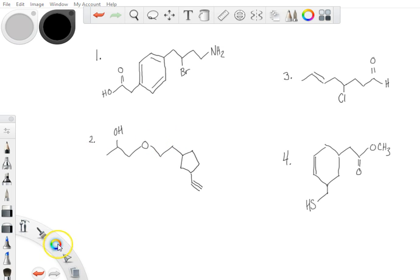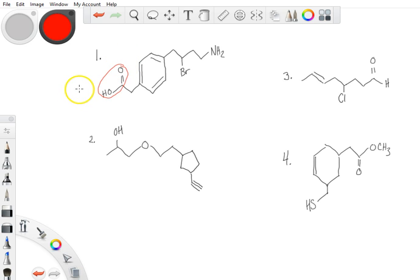All right everybody welcome back. I'm going to change to red ink here as we are going through so it's easier to identify. So in problem one there were a couple of functional groups. This guy right here you should have caught as a carboxylic acid. I am going to abbreviate just because of space around these molecules.